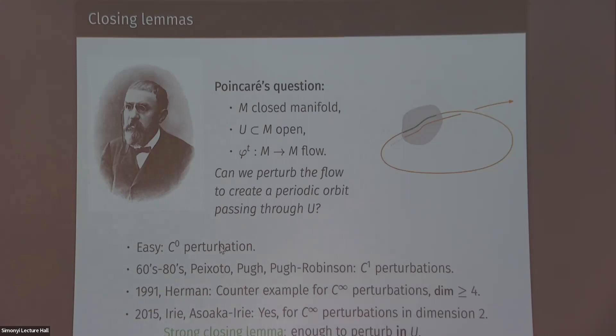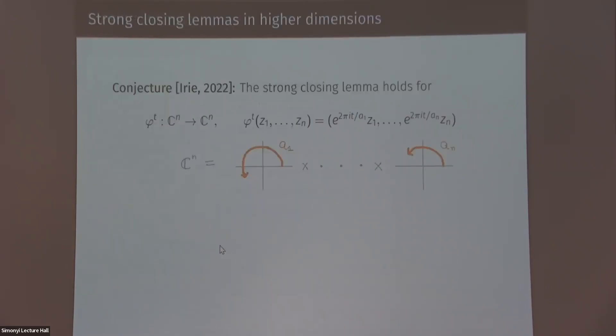So now this is the question we basically want to study. We want to understand if this closing phenomena exists in higher dimensions and if there is a condition that will guarantee it. One strategy to try to walk in the path towards such an understanding is to look at some basic class of flows and see if you can prove this closing property for the basic class of flows just as a starting point. So this was initiated or asked by a conjecture of Irie. So Irie conjectured that the strong closing lemma holds for the following extremely simple flows. So you just have CN. You look at it as you have the C factors. And then you rotate each C factor with a speed that is determined by some coefficient.